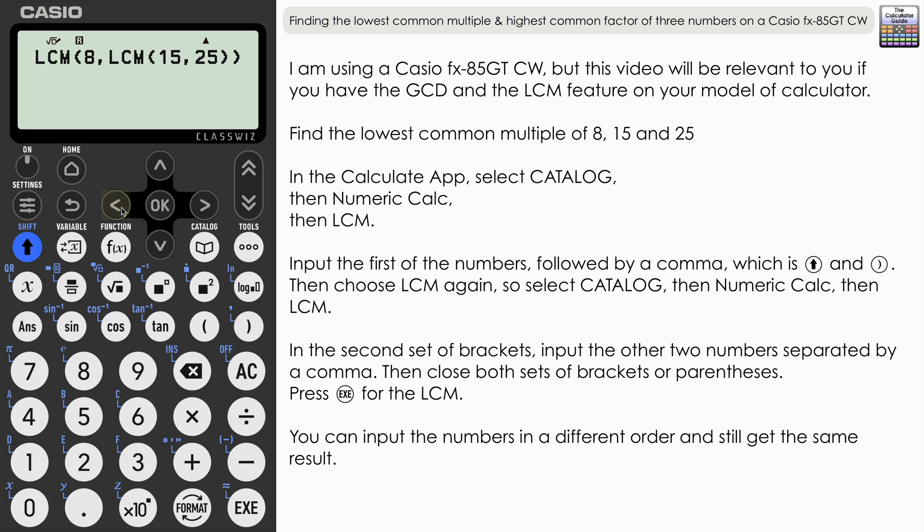I'll just quickly show you that if I change around the order of some of the numbers in here, so if I maybe make it 15 and 8 in the second bracket and lead with the 25, I've still got 600. Let's swap the 25 and the 15 around, press Execute, and it's 600 again.